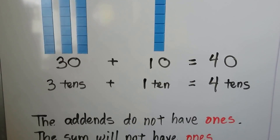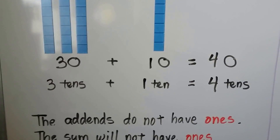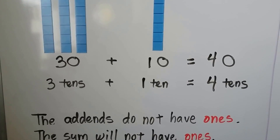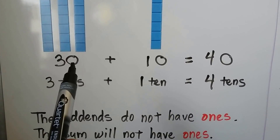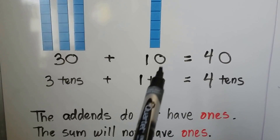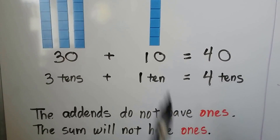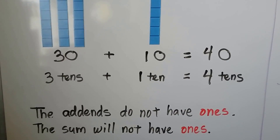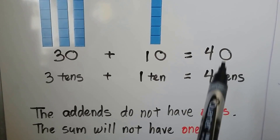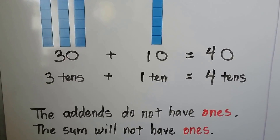The addends do not have ones. See how there's no ones in the ones place? So the sum will not have ones.